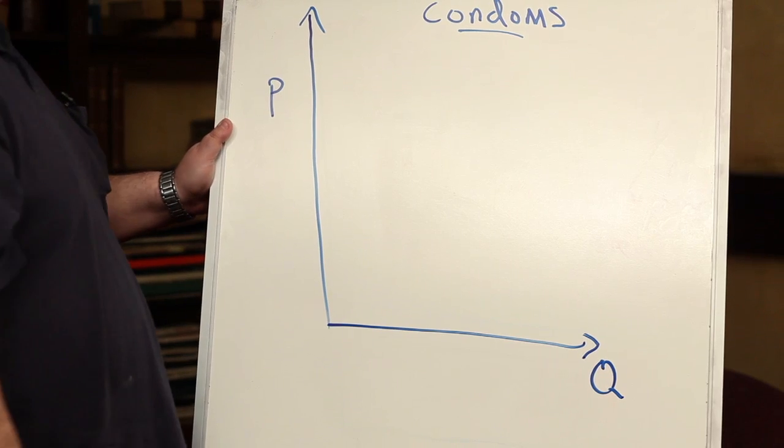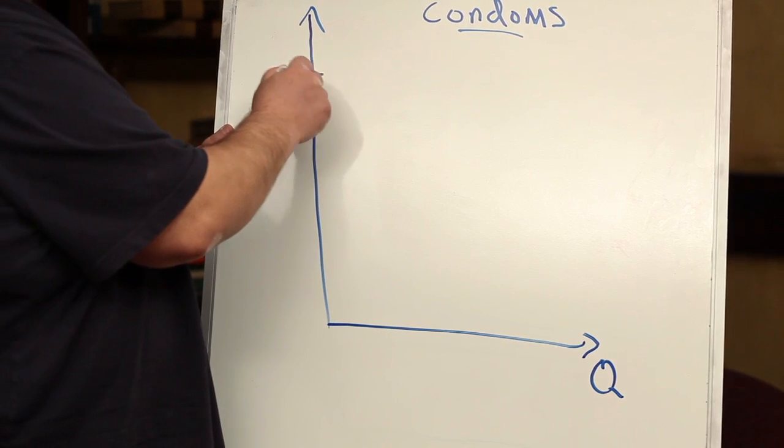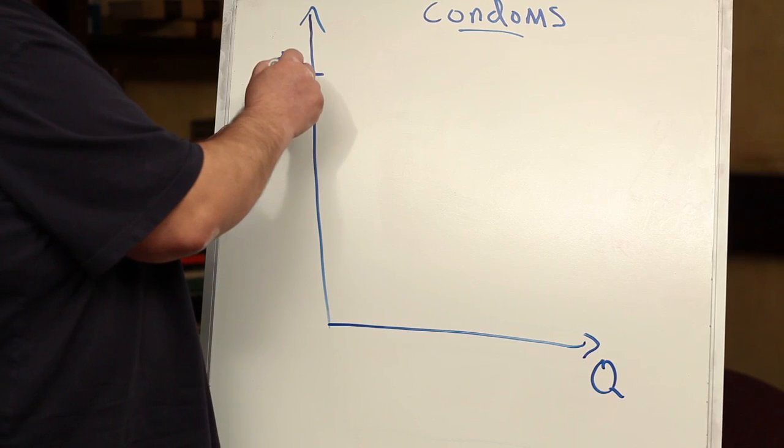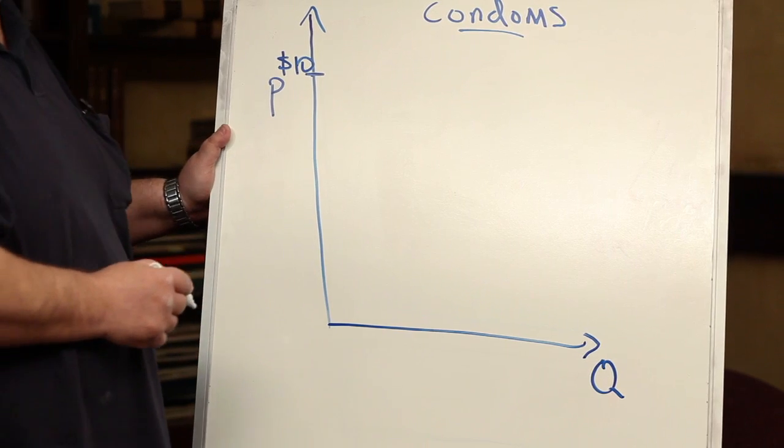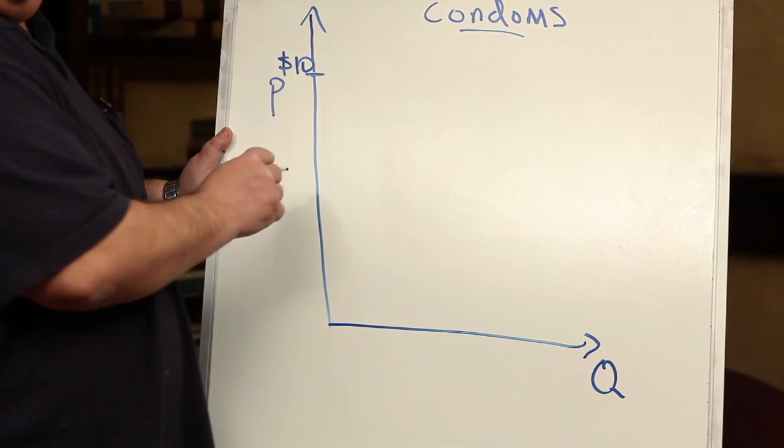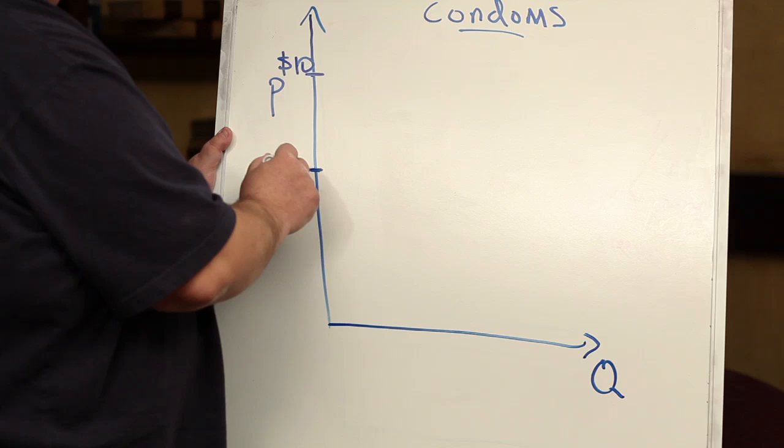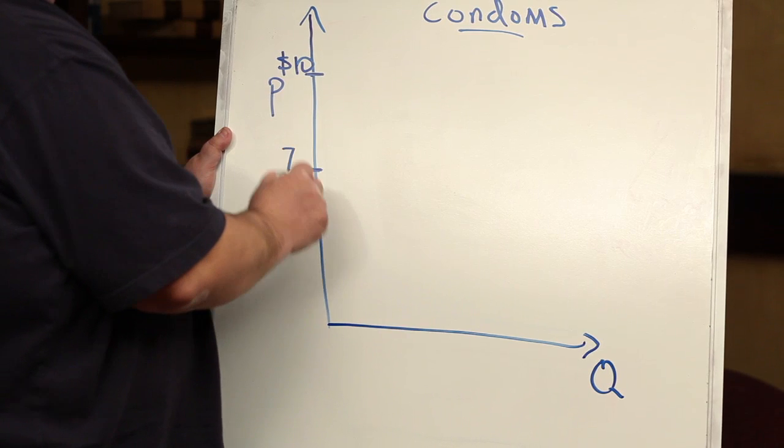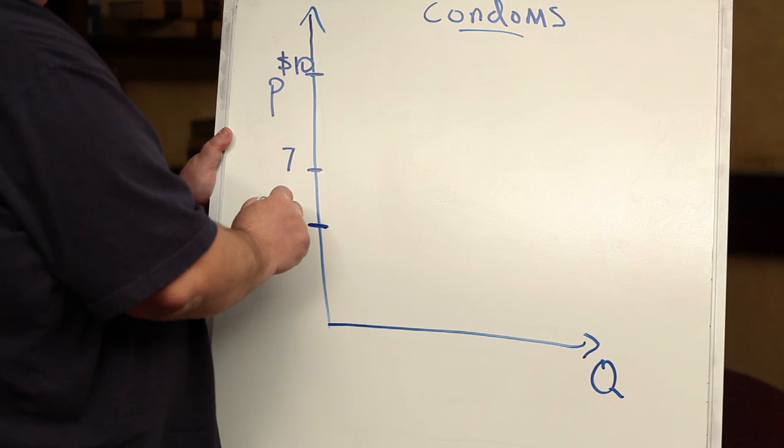And we had our first price of ten dollars, and then we have a price of seven dollars, and still another price of five dollars.